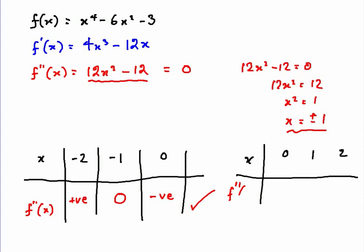We can test it once again at x = 1. f″(x): we know we've got zero there, positive at x = 2, and negative at x = 0. So once again we have found a second point of inflection.